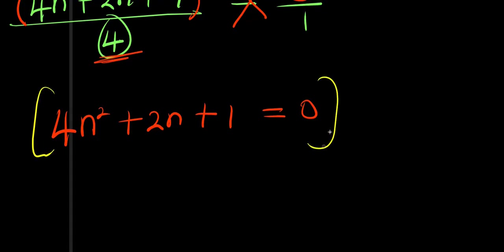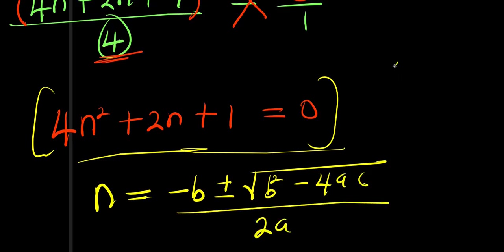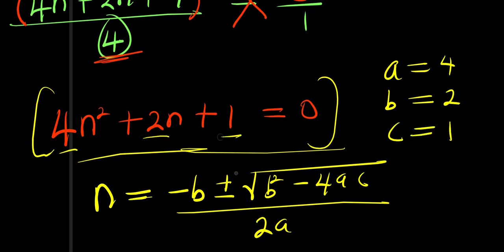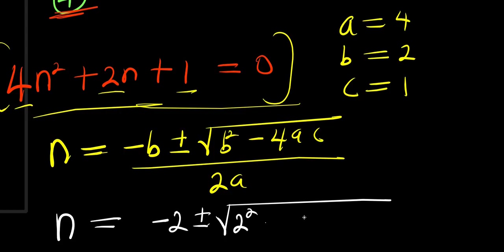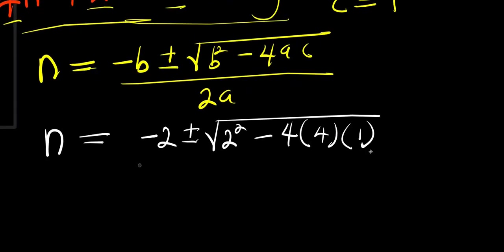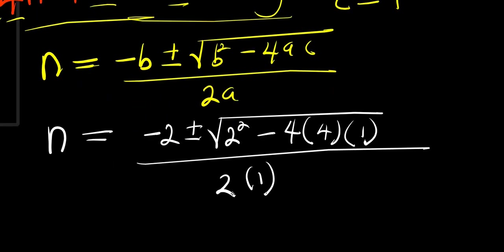Now that we have the quadratic equation 4n² + 2n + 1 = 0, we solve using the quadratic formula. This is not factorizable, so we use: n equals negative b plus or minus square root of (b² minus 4ac), divided by 2a. Here a equals 4, b equals 2, and c equals 1. So n equals negative 2 plus or minus square root of (2² minus 4 times 4 times 1), divided by 2 times 4, which is 8.